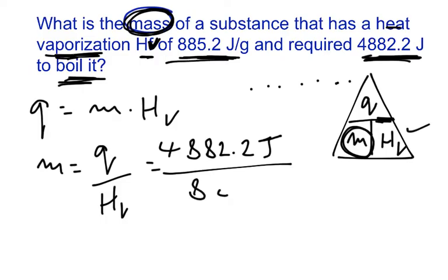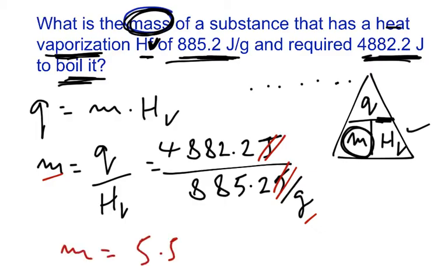All right, so what happens next, we do a simple cancellation, the joules and the joules cancels out, we're left with grams, that makes sense since we're looking for mass. And our mass in this problem would be 5.52 grams, and you're done, and you simply move on.